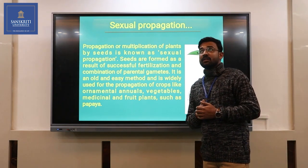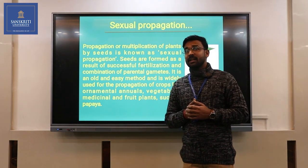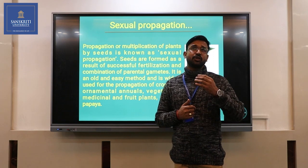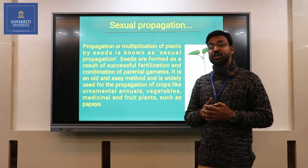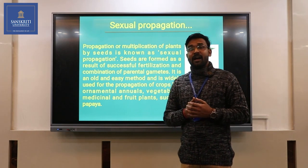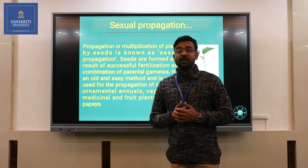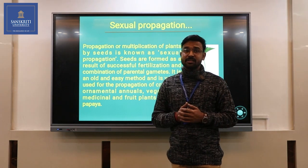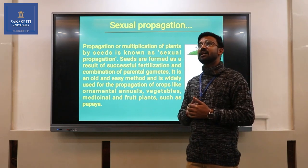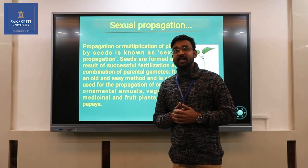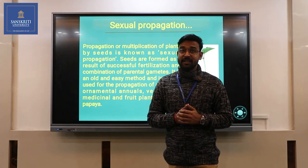Most of the horticultural crops like vegetables — tomato, brinjal, chili, most of the cucurbit and cruciferous vegetables like cauliflower, cabbage, broccoli — and fruits like papaya and falsa are propagated by the sexual propagation method.